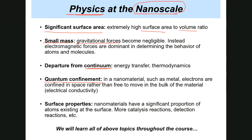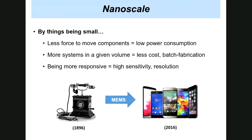Surface properties also change at the nanoscale: there may be more rapid chemical reactions, detection of chemical agents, and a large surface area can absorb large amounts of radiation heat energy. We will learn about all of these topics throughout the course. If you feel any explanation is not sufficient, you can always ask me or request that I explain a certain topic more.